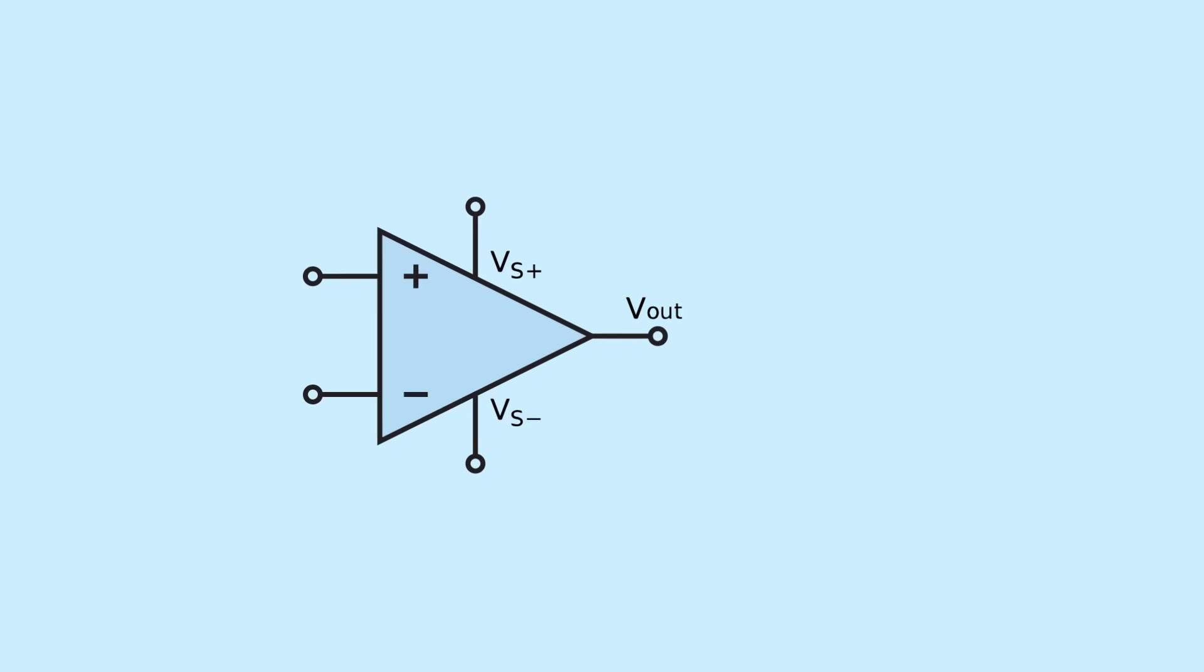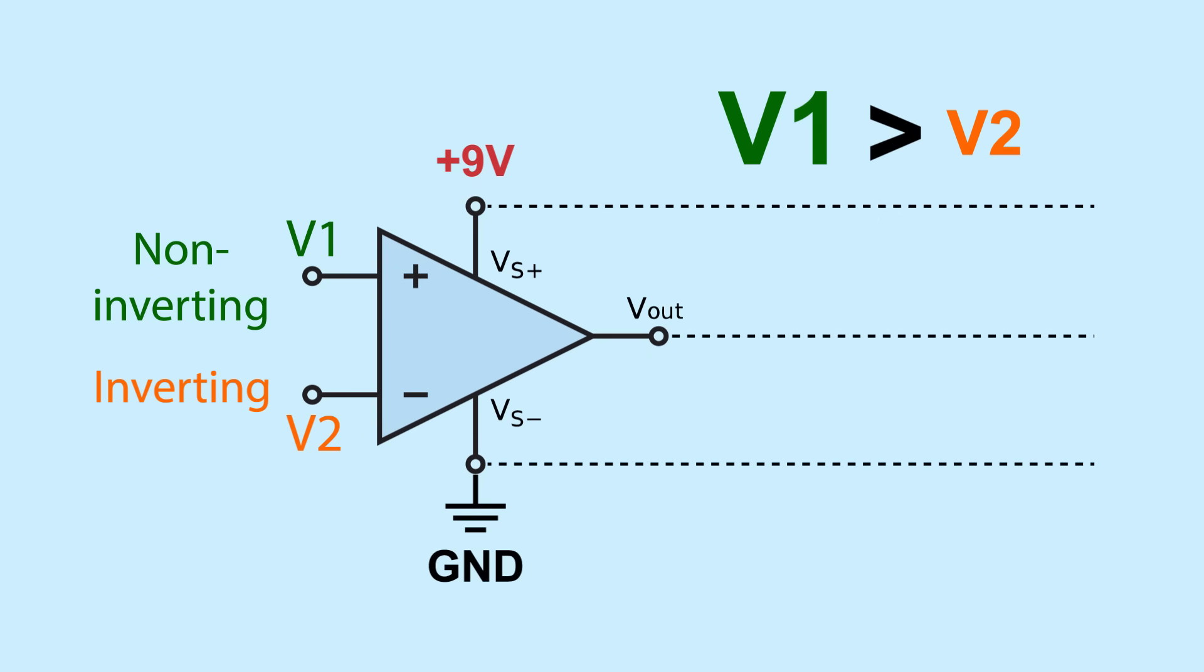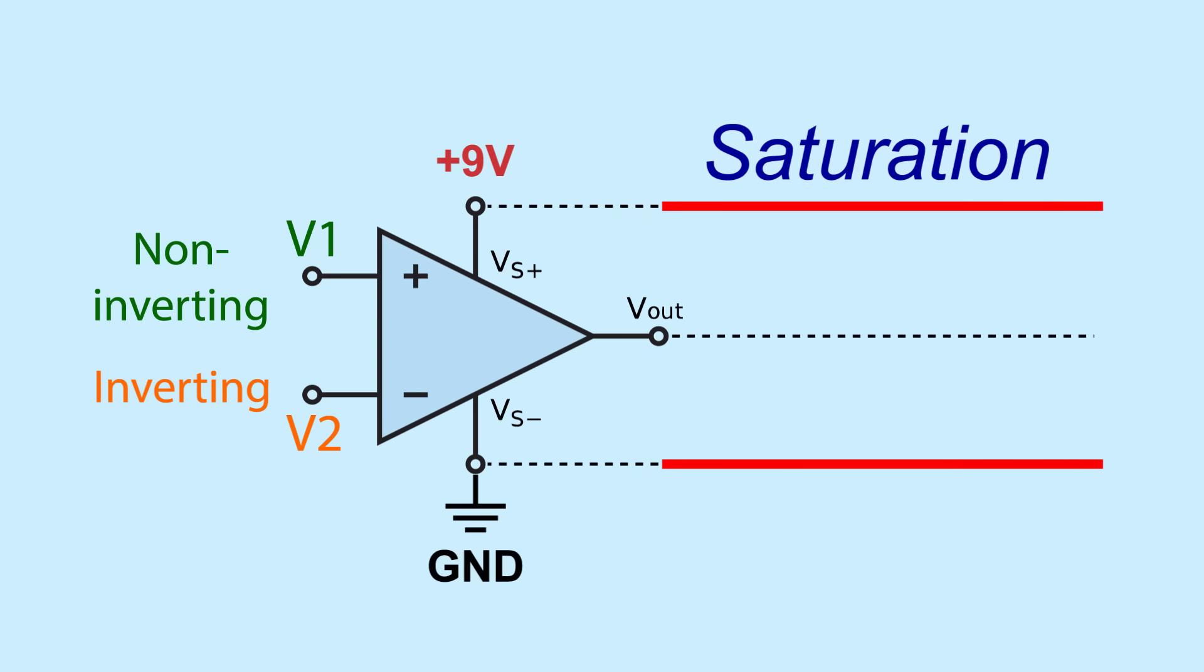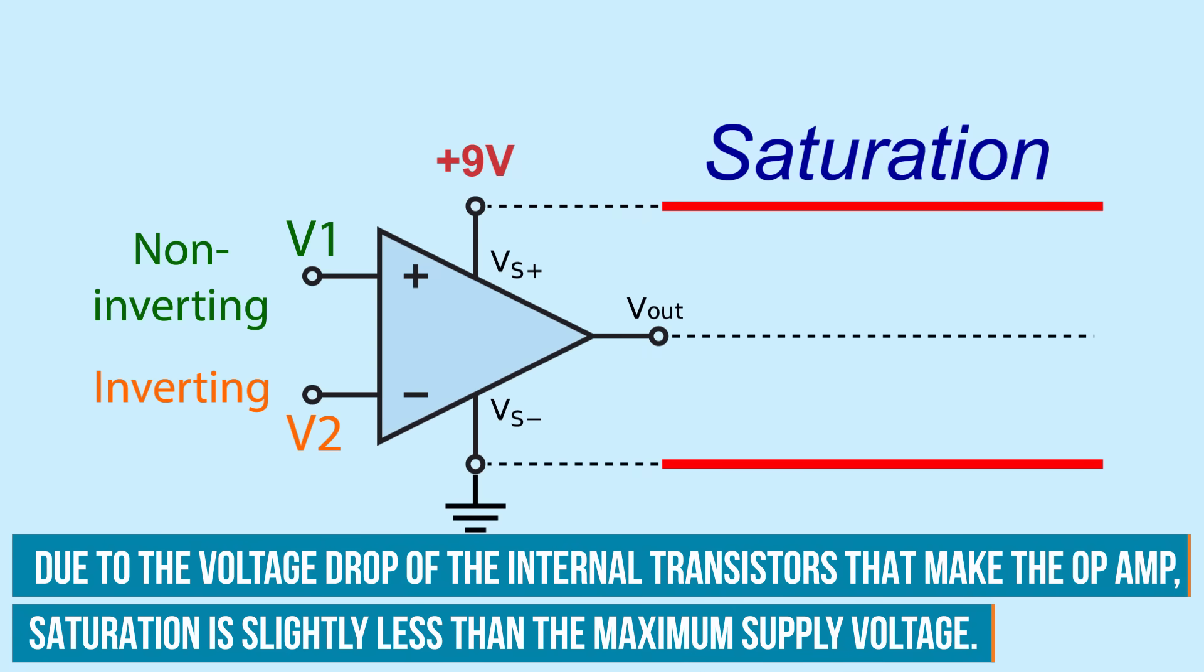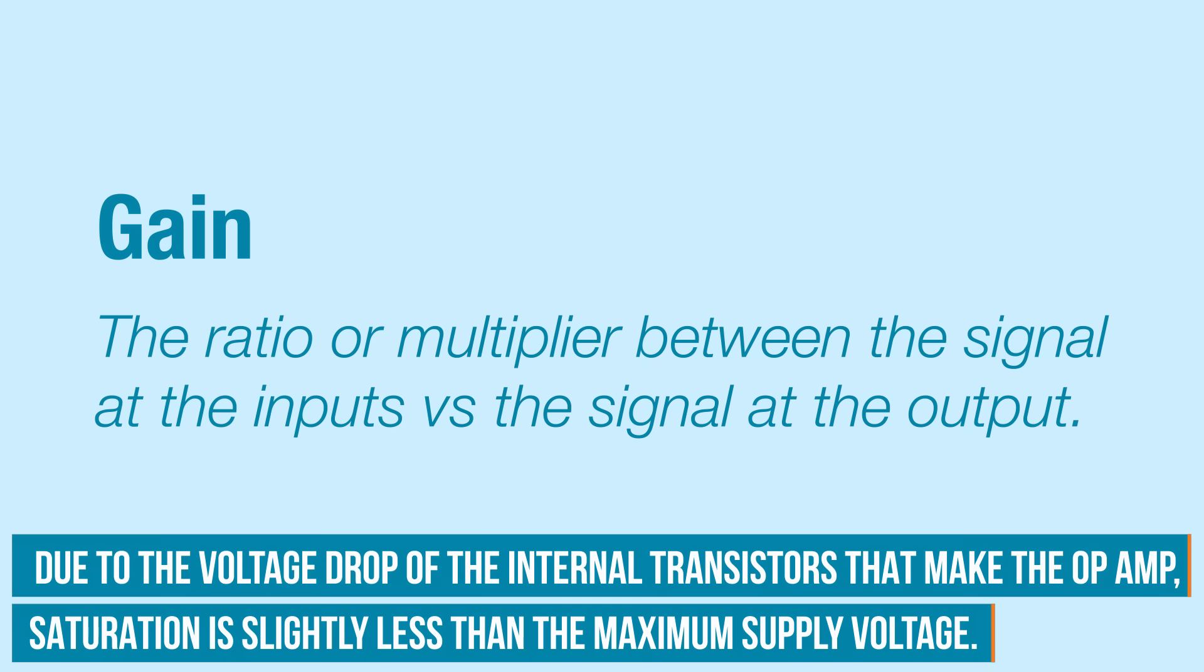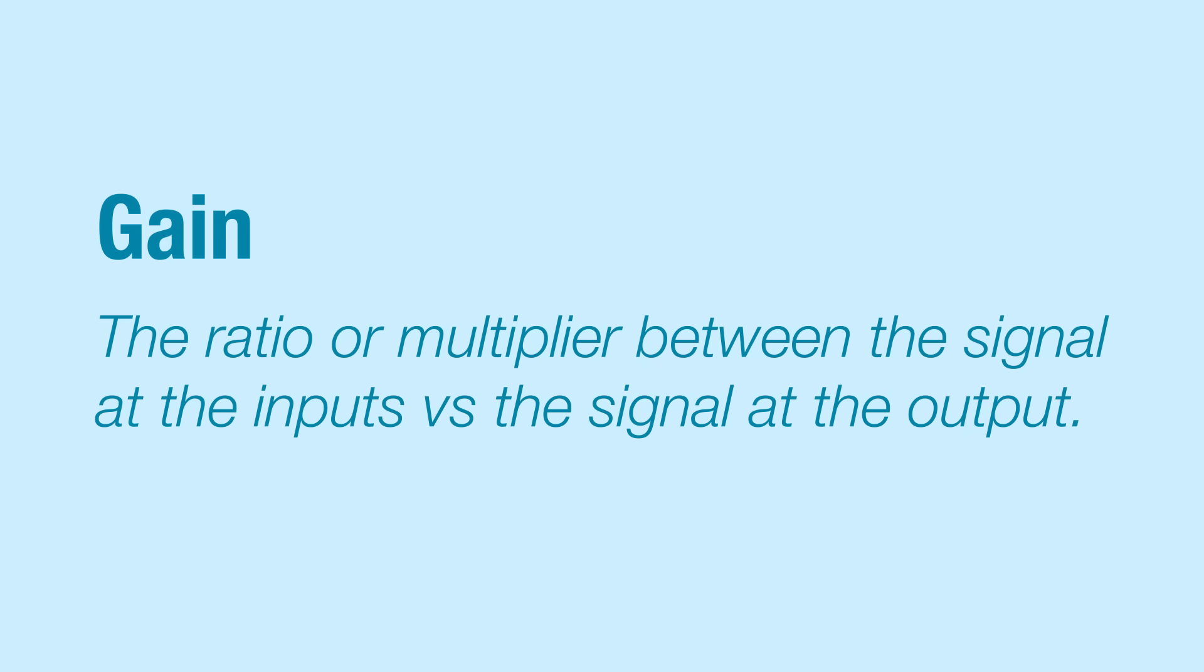Let's say our op amp is connected to a 9 volt power supply. The two inputs are non-inverting, labeled positive, and inverting, labeled negative. If the voltage at the positive input is larger, the output would go towards the positive supply voltage, 9 volts. If the voltage at the negative input is larger, the output would go towards the negative supply voltage, ground or 0 volts. When the output reaches either of these points, it reaches saturation and is at the maximum rated gain. Gain is what we call the ratio or multiplier between the signal at the inputs versus the signal at the output.